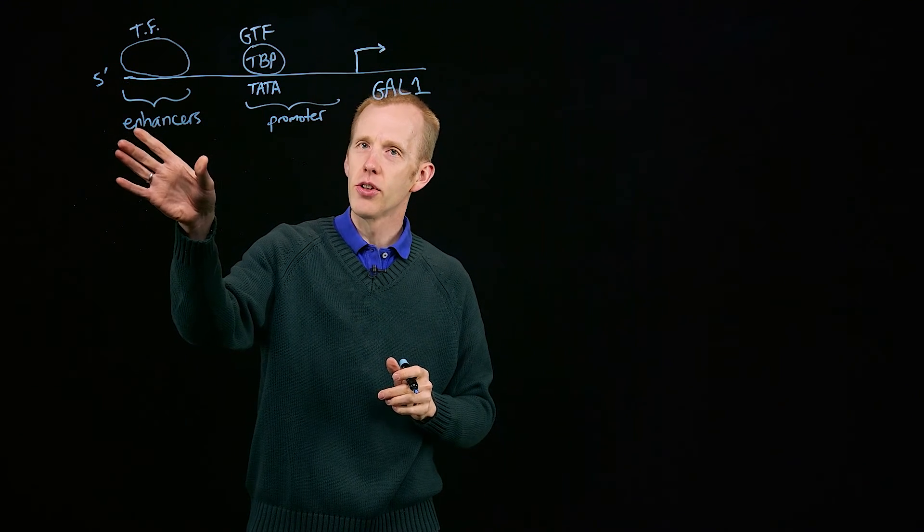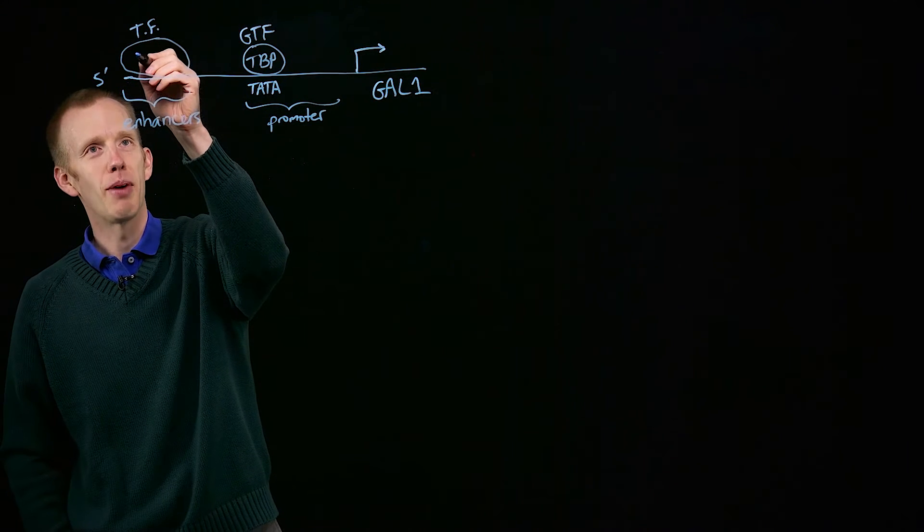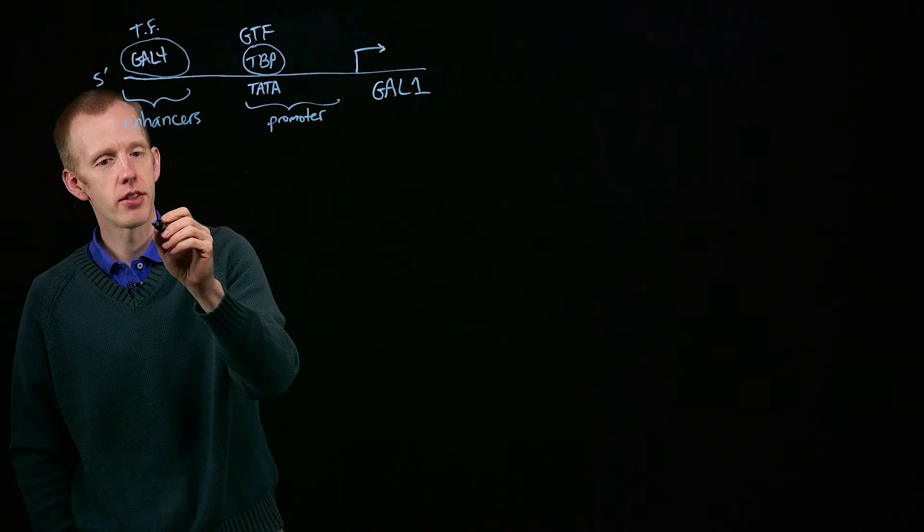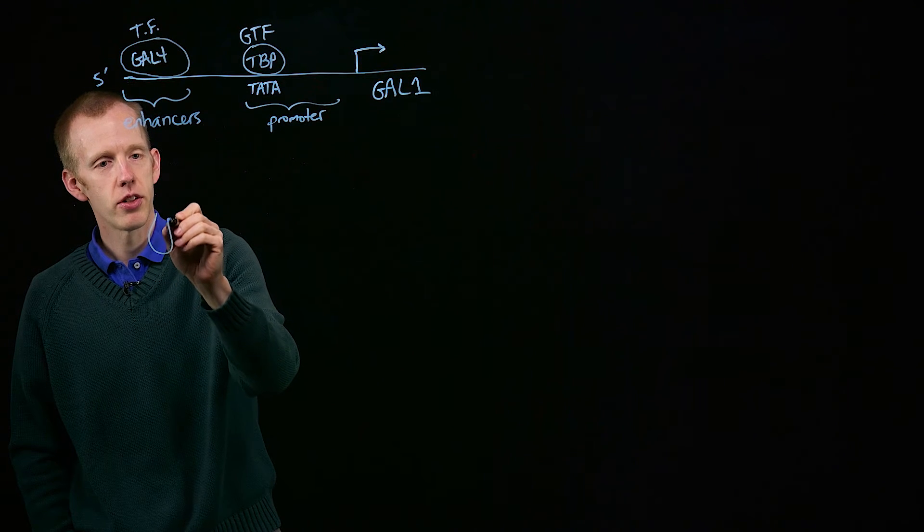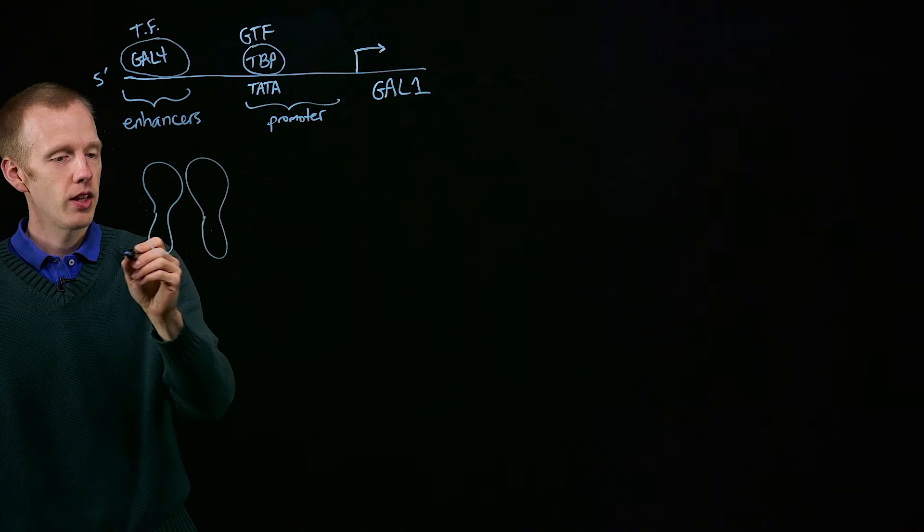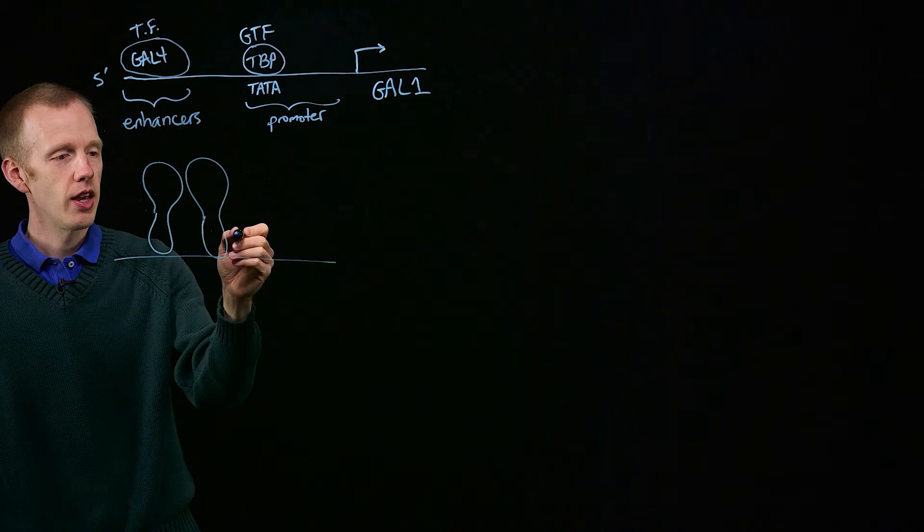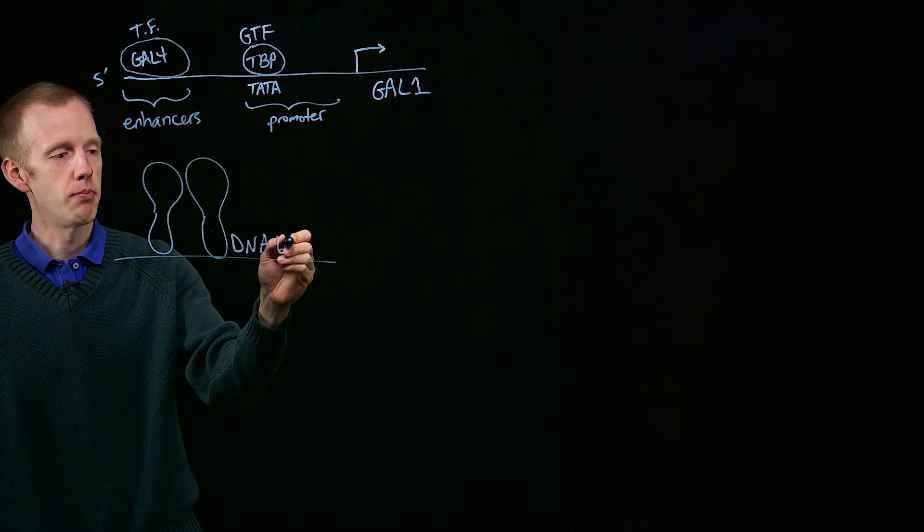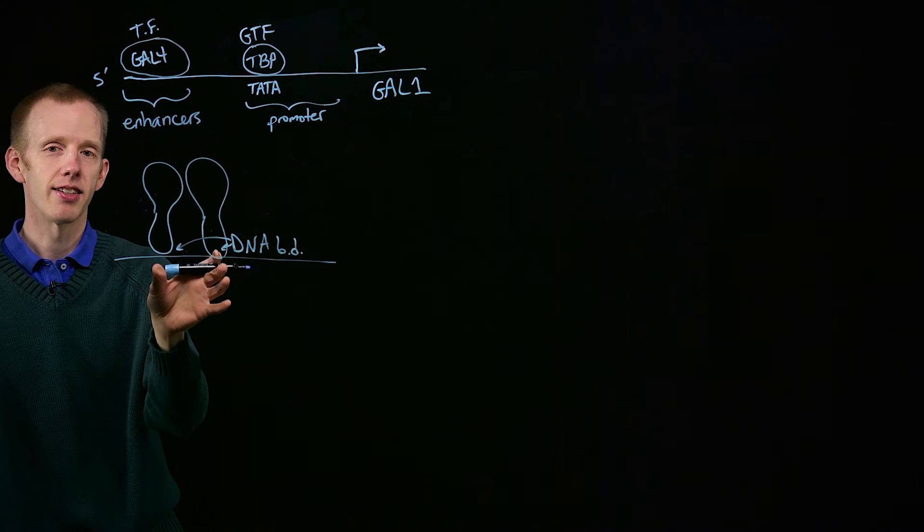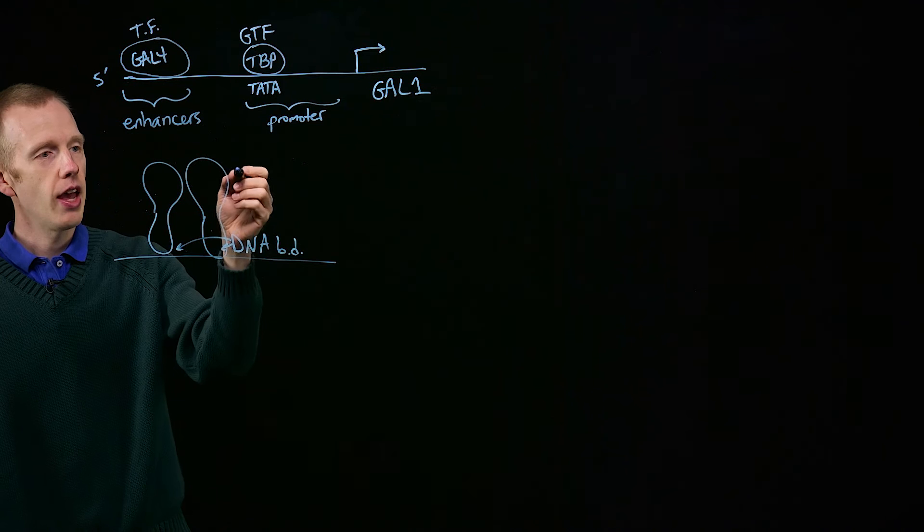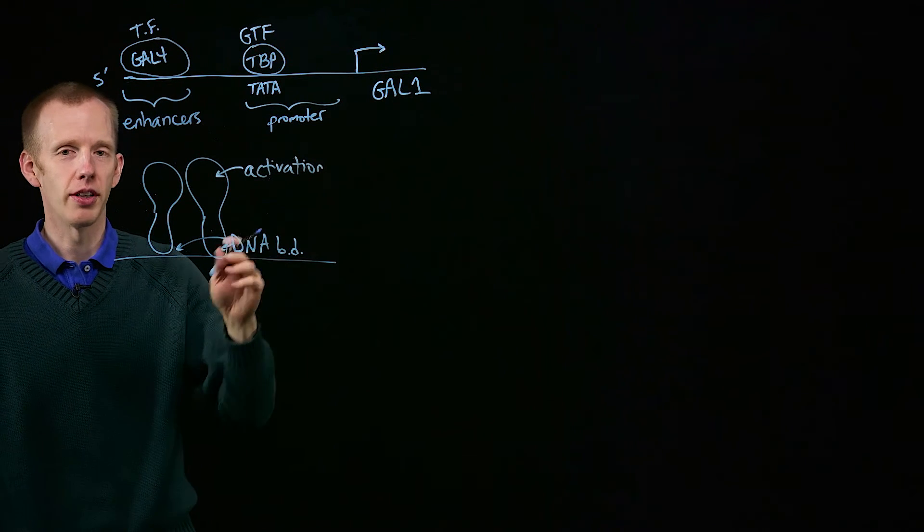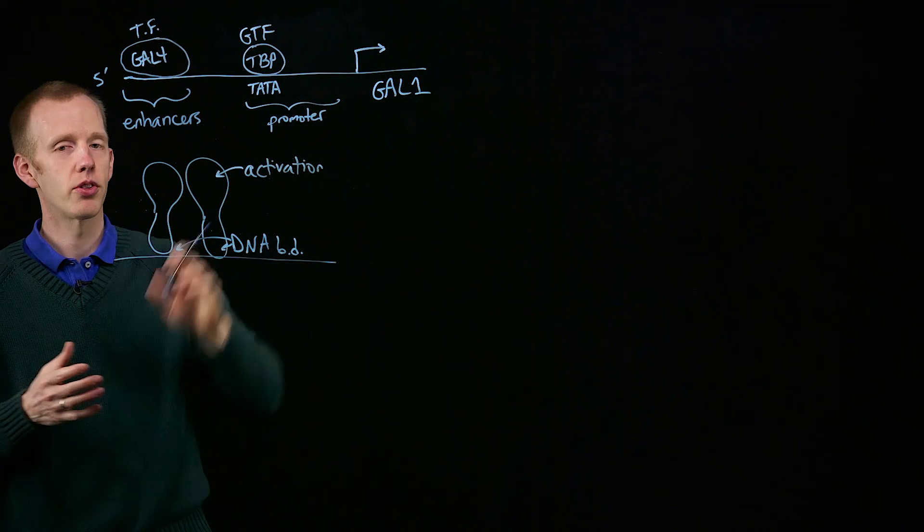Now, the enhancer that turns on GAL1, the protein that binds the enhancer for GAL1, is called GAL4. I'm going to blow up this section of the enhancer a little bit. GAL4 has two domains. GAL4 works in this sense as a dimer. It's got a DNA binding domain. Those are the sites that specifically recognize the sequence of the GAL1 enhancer. And then it's also got an activation domain. That's the part of the protein that actually interacts with other proteins and allows for transcription of GAL1.